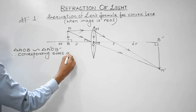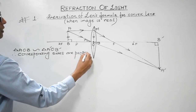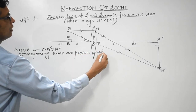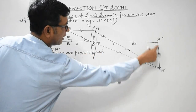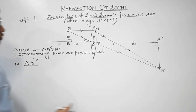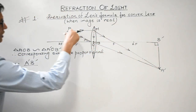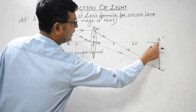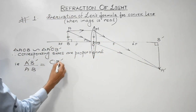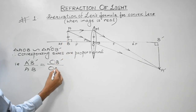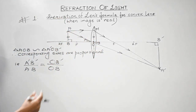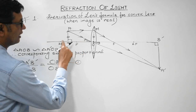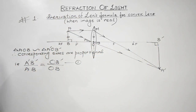Corresponding sides are proportional. Consider A'B' — its corresponding side in the other similar triangle is AB. Consider base of the big triangle OB'. The base of the smaller triangle is OB. So A'B' divided by AB equals OB' divided by OB. Put this as equation number one.